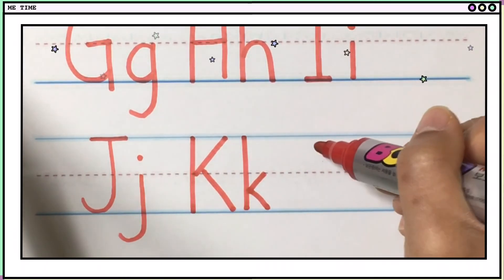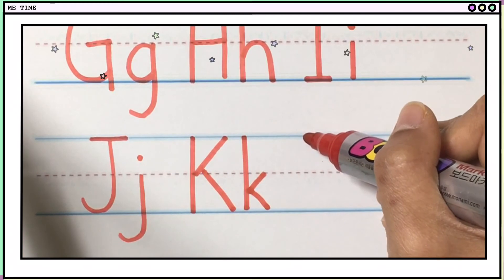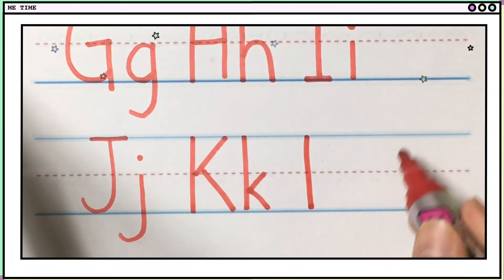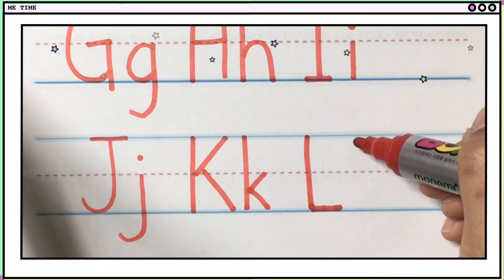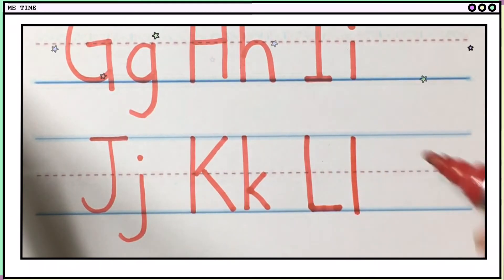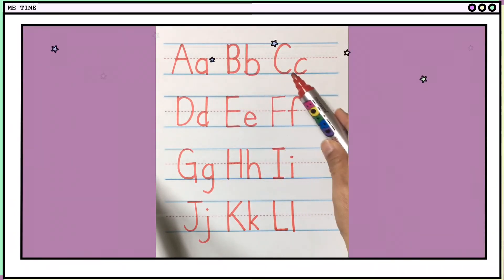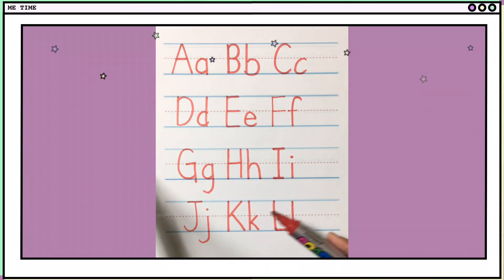Okay, now the last letter for part one is, yes, L. One line here, and one small line here. One, two. And then, small L is one straight line. So, big L, small L. So let's review. A, B, C, D, E, F, G, H, I, J, K, L. Okay, and there, big and small letter.